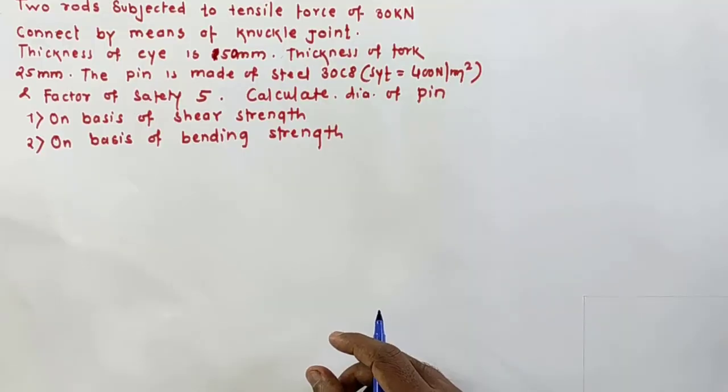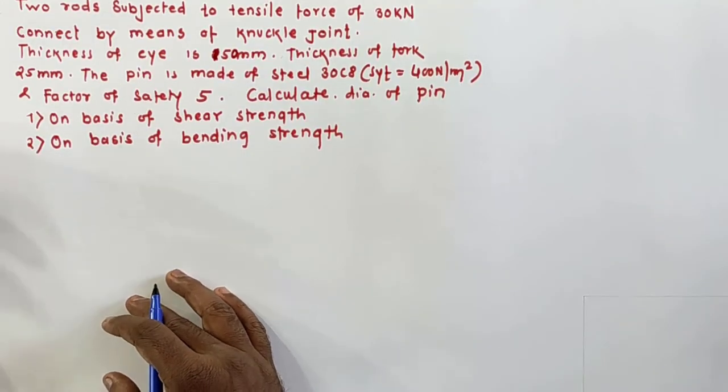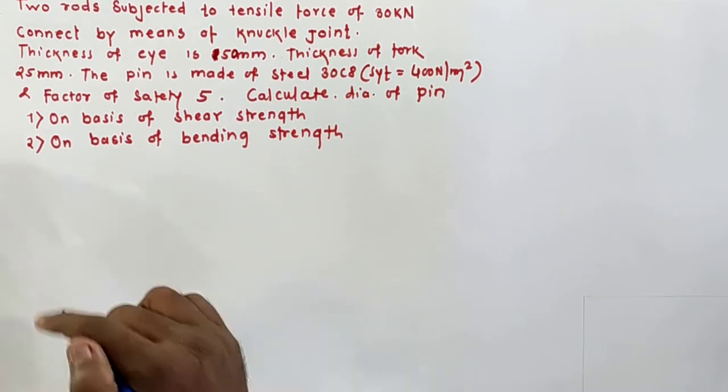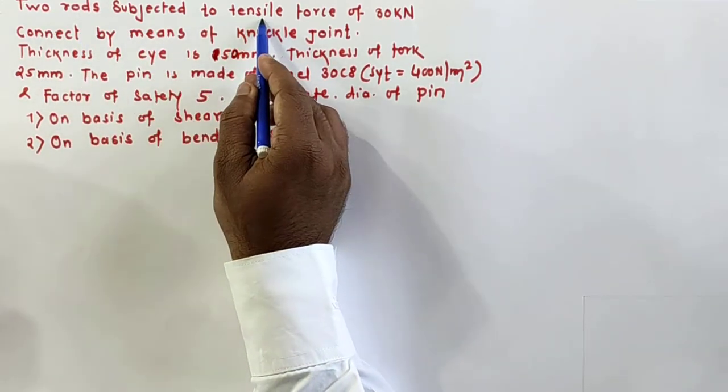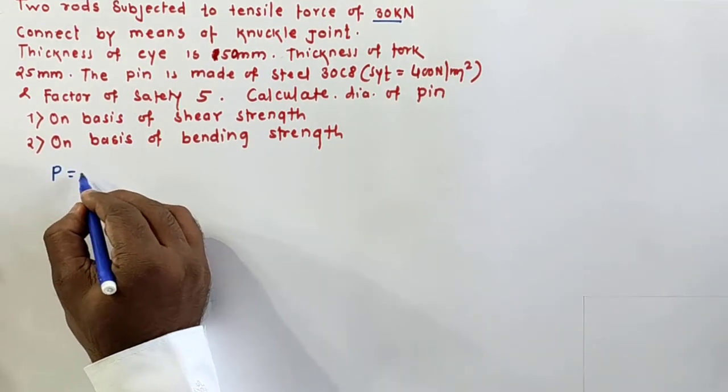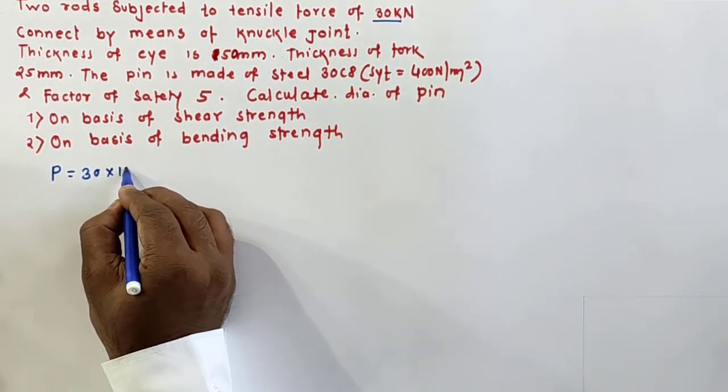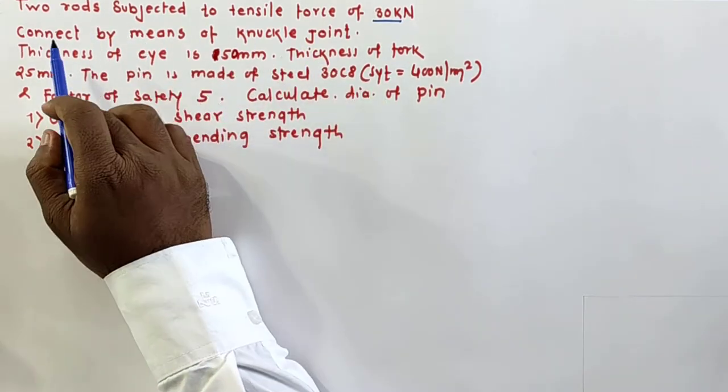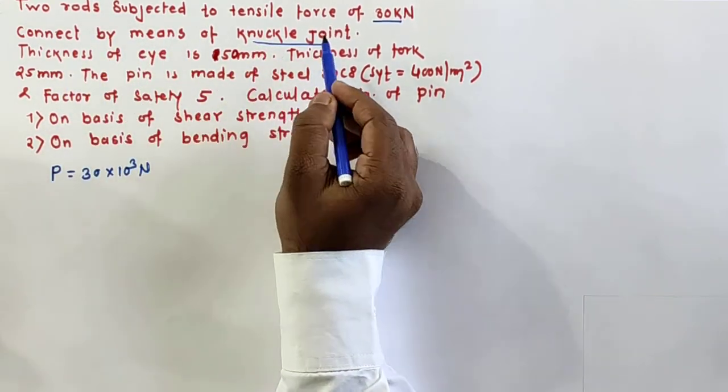We'll solve the numerical which was asked in the exam. Simple numerical - just understand the statement and understand what we need to calculate and work accordingly. So I'll read the problem: two rods subjected to tensile force of 30 kilonewton, so P equals 30 kilonewton, then connect by means of knuckle joint.